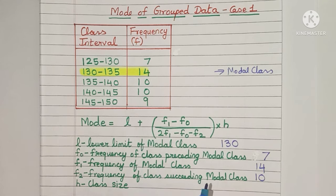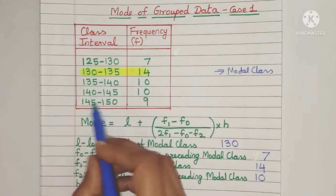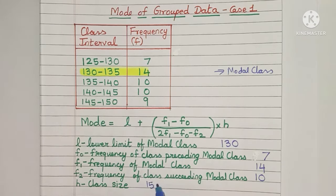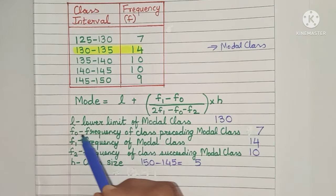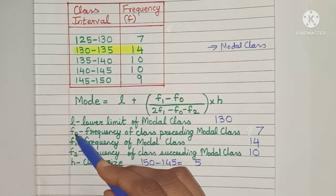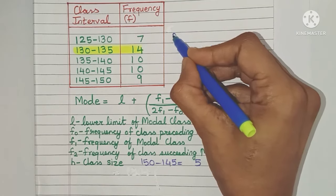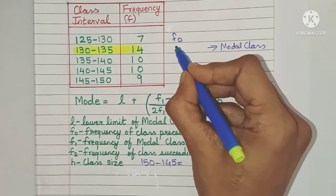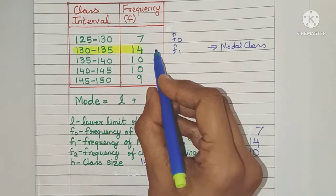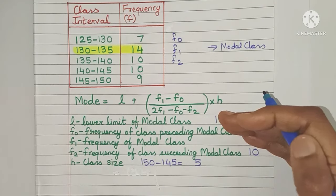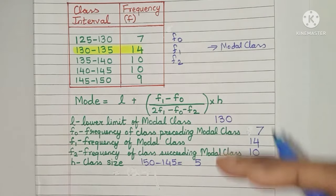H is the class size, which is easy to find. Just take any class interval's upper limit minus lower limit — for example, 150 minus 145 gives a class size of 5. Just take care: F0 is the frequency of the preceding class, F1 is the frequency of the modal class, and F2 is the frequency of the succeeding class. Don't get confused.